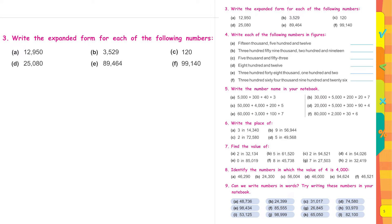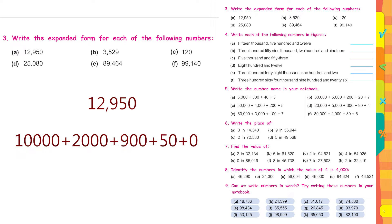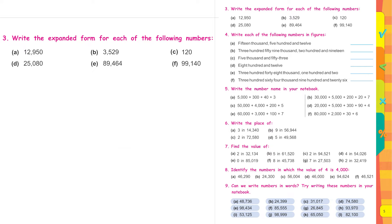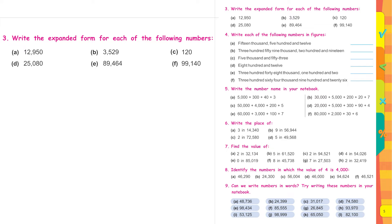Part a: twelve thousand nine hundred and fifty — in expanded form it is 10,000 + 2,000 + 900 + 50 + 0. For part b: 3,000 + 500 + 20 + 9. For part c: 100 + 20 + 0. Parts d, e, and f should be tried by you.